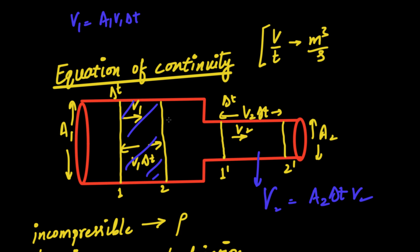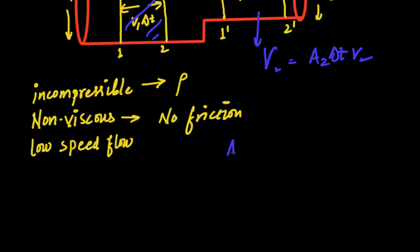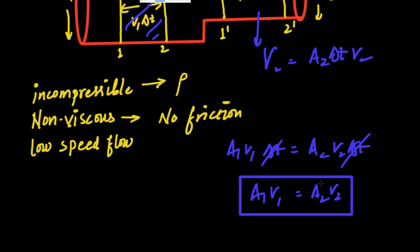They both must be equal, because that is the same volume covered in the same interval of time. a1 v1 delta t must be equal to a2 v2 delta t. Delta t gets cancelled out and we get a1 v1 equals to a2 v2. This is our equation of continuity, which simplifies a lot of things.